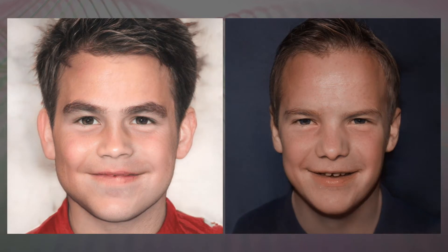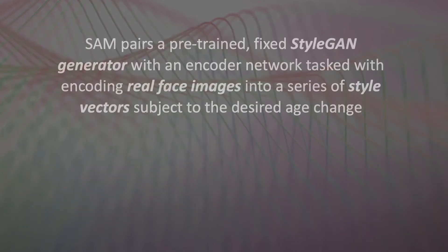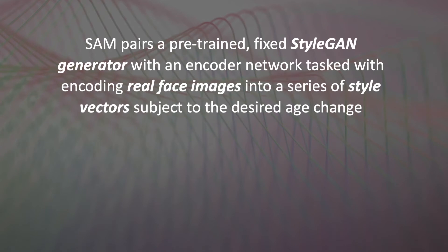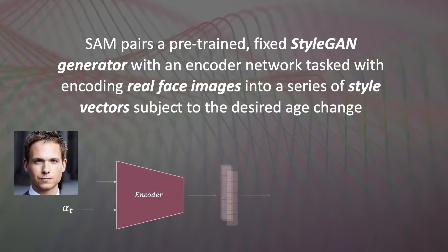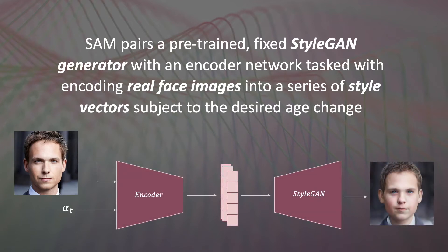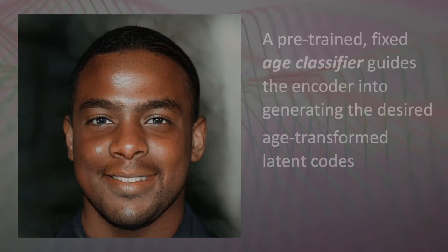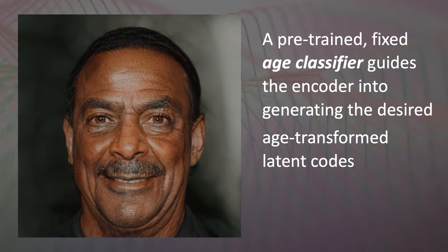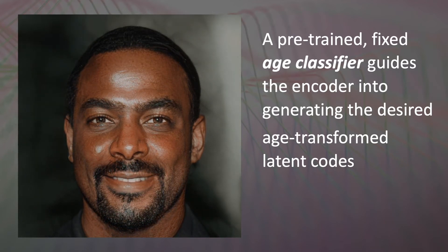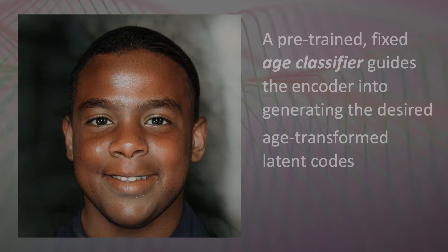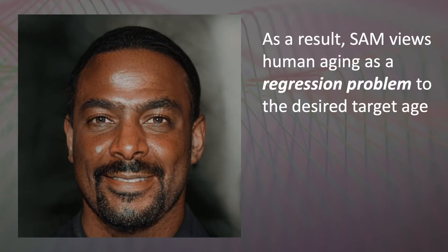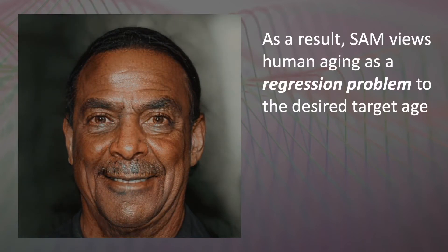Note that all results shown here are obtained on real face images. SAM pairs a pre-trained fixed StyleGAN generator with an encoder network tasked with encoding real face images into a series of style vectors subject to the desired age change. A pre-trained fixed age classifier guides the encoder into generating the desired age-transformed latent codes. As a result, SAM views human aging as a regression problem to the desired target age.